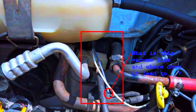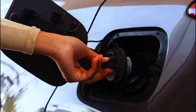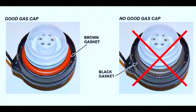Visual inspection: start with a visual inspection of the EVAP system. Check for any obvious signs of damage to the hoses or wiring that could be affecting the pressure sensor's performance. Check the gas cap: a loose or damaged gas cap can cause issues with the EVAP system's pressure, so ensure it's tightened or replace it if necessary.